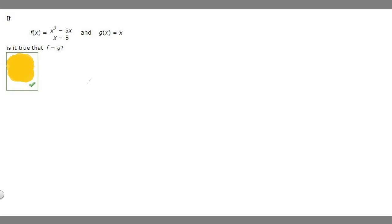So let's think about this problem. Now, the thing you might have thought to do is, if you have x squared minus 5x over x minus 5, if you factor out an x, you'll get x times x minus 5 over x minus 5, and these will cancel, and you'll get x. So is it true that x equals x? It might seem that's the case, but it's not, and I'll explain why.